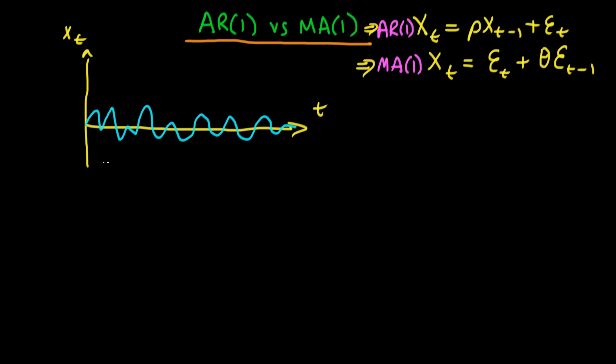For both of these processes, we have to have a process which looks something like this, where this value here is zero. If it doesn't, then it can neither be an AR(1) process nor can it be an MA(1) process.